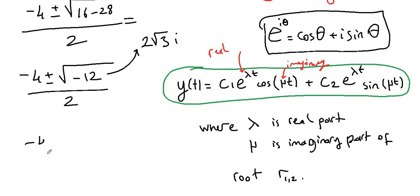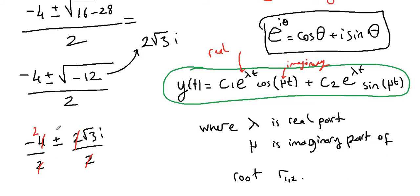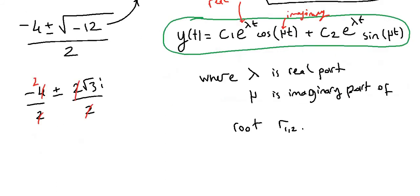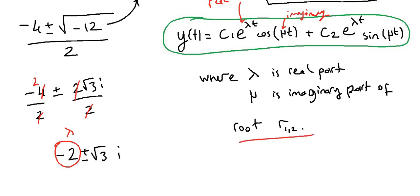Separating the fractions: negative 4 over 2, plus or minus 2√3·i over 2. The 2s cancel, giving us negative 2 plus or minus √3·i.